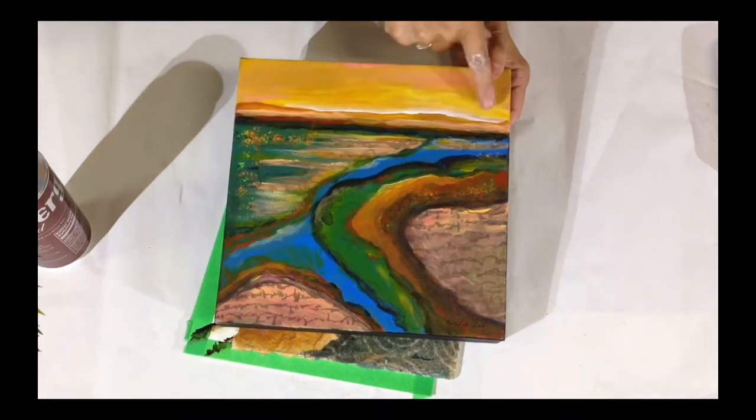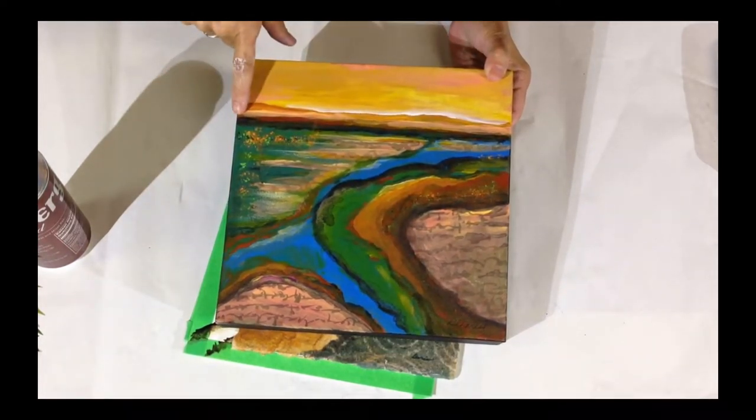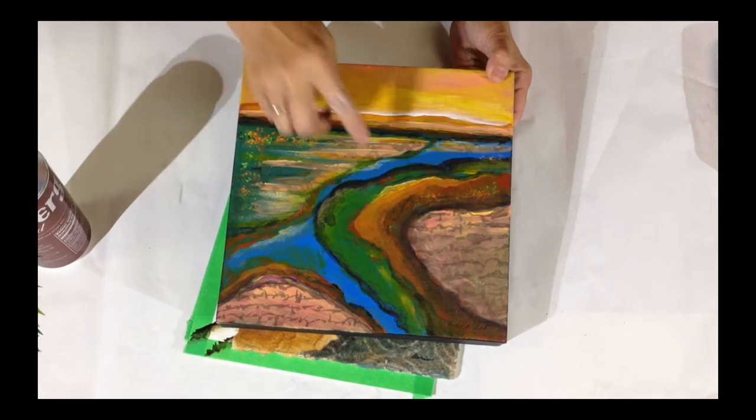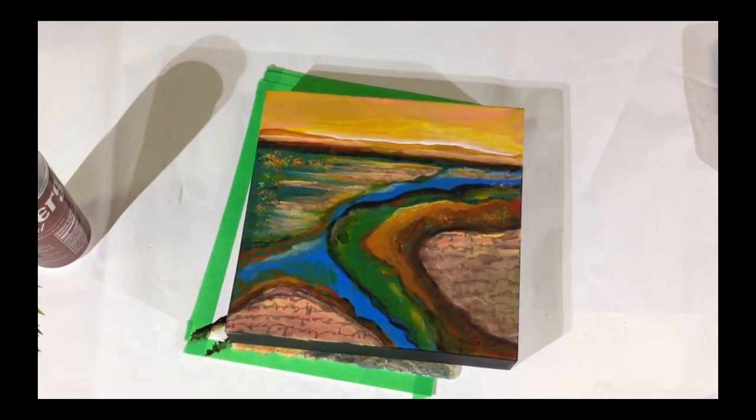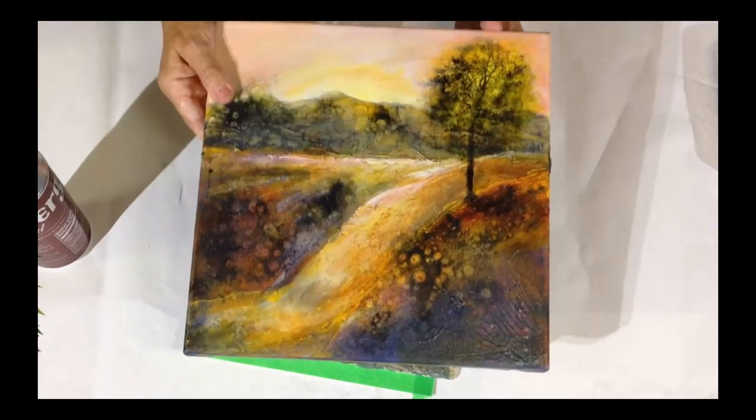So here's a river that leads to the focal point, and you have little details around similar to the beer can, but not so complex.